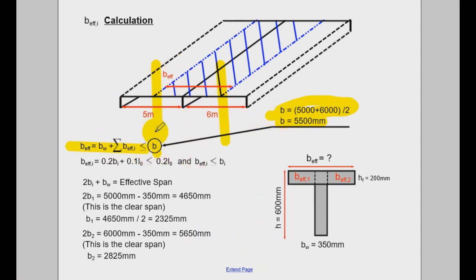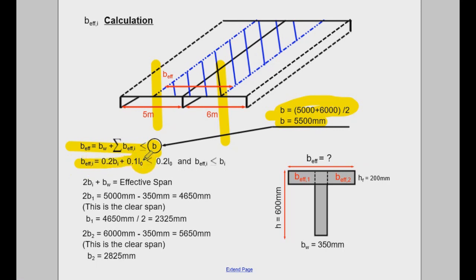So I'm just taking 5000 over 2 — that's the midpoint — plus 6000 over 2, so what I get is 5500 mm. That's our limit. Now we move on and find the next value we need: b_effective_i. b_effective_i is given by the equation: b_effective_i equals 0.2*bi plus 0.1*lo. We already have lo, the contraflexure distance, so what we need to work out is bi.